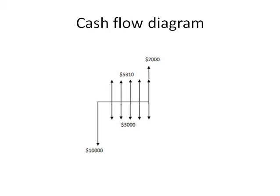Welcome to the second part of this lecture. I have this cash flow diagram. The initial investment is $10,000, with annual revenues of $5,310, annual expenses of $3,000, and a salvage value of $2,000. I want to show you how to get the equivalence of any of these amounts found in this cash flow diagram, either in the present or in the future — introducing the concept of equivalence.